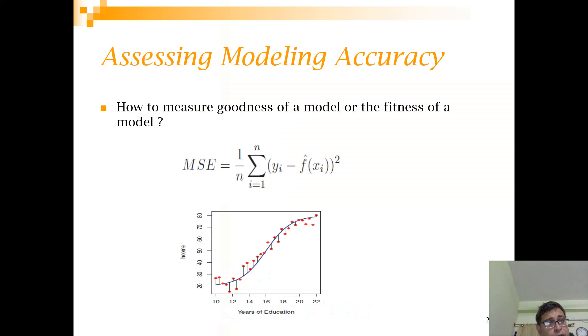So now first evaluating regression models. Regression models are typically evaluated using a measure called mean square error. So let's look at the term very closely. So yi is the actual output or actual dependent variable. In this case if you look at the chart, year of education is the independent variable and income is the dependent variable. And f bar xi is what you are predicting based on your model.